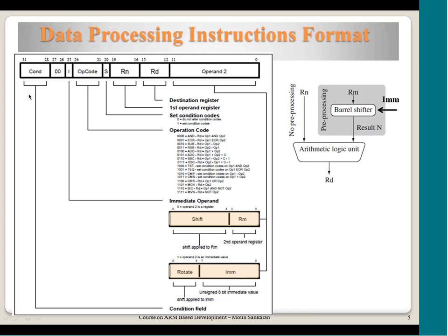After fetching, the instruction goes into the decode stage of the pipeline where it is interpreted. For the decode logic to understand the instruction, there must be a standard unambiguous format. The first 4 bits are the conditional field. Every instruction can be combined with a condition — whether it should execute always or only when some condition is met. For example, ADD EQ means the addition is performed only when the zero flag is set.